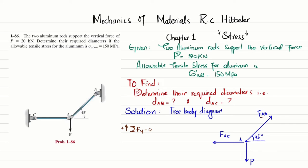The rod AB exerts a force FAB at point A, which makes an angle of 45 degrees. Similarly, rod AC exerts a force FAC in the horizontal direction. We will apply the equations of equilibrium. The first equation is that the sum of all forces along the y-direction must be equal to zero, with upward forces taken as positive. FAB has two components: one along the x-direction and one along the y-direction.